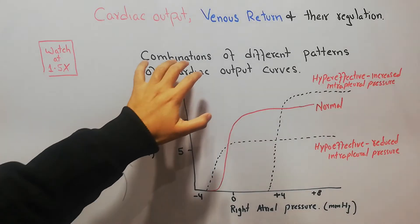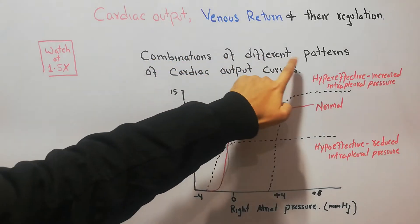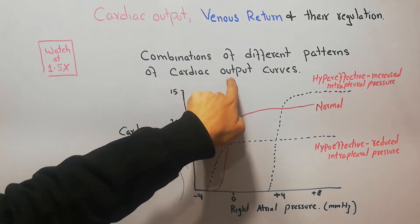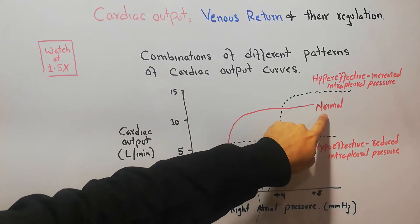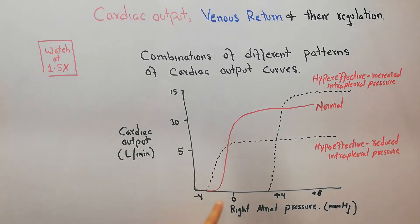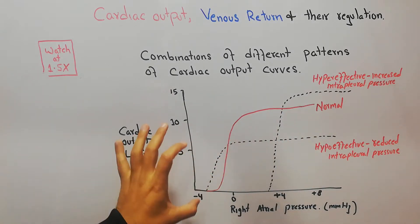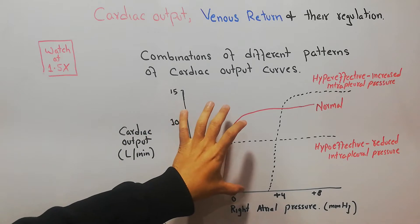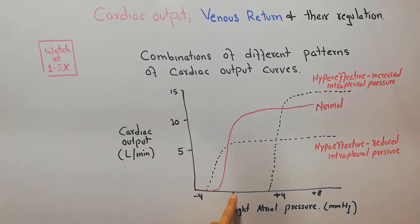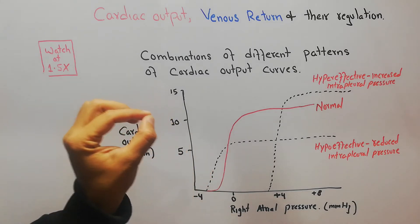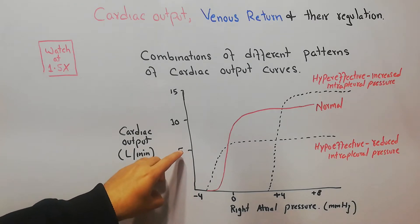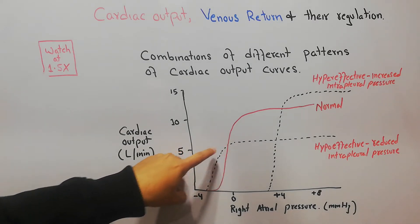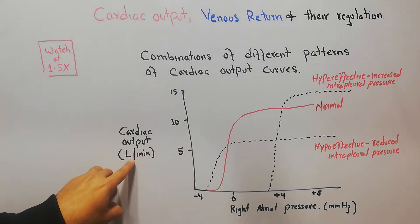Today in this lecture we are going to discuss combinations of different patterns of cardiac output curves. We have basically discussed the normal cardiac output curve previously, and according to that curve, at normal right atrial pressure with normal venous return, the cardiac output of an average person is five liters per minute.